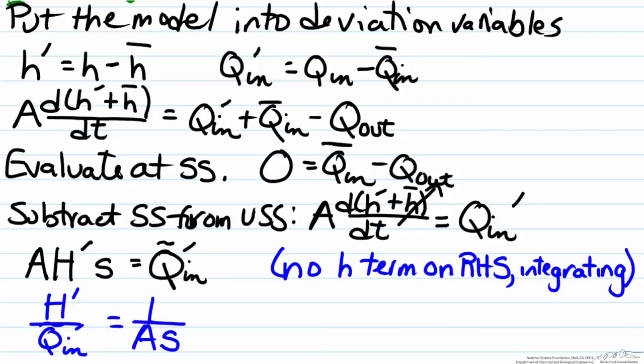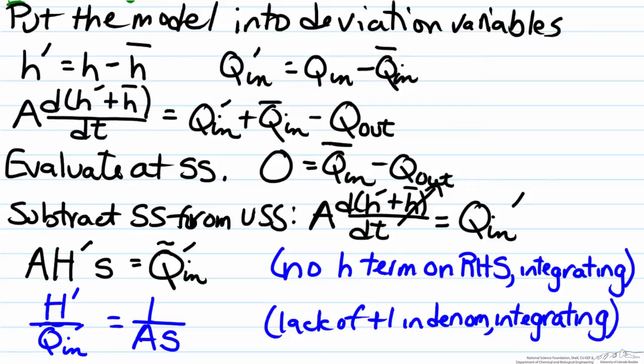The important point to note here is the fact that this is, again, the lack of a plus one in the denominator is also a good sign of an integrating process. Generally most processes we have have a denominator of tau*s + 1, or tau^2*s^2 + 2*zeta. There is always some constant there, but here we do not see that.